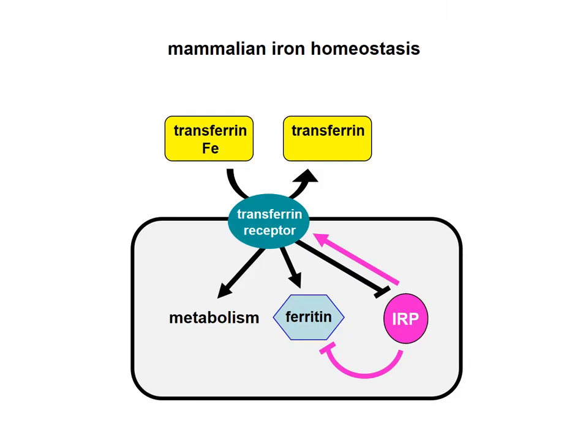Here you can see a very simplified scheme of mammalian iron homeostasis. Key components are transferrin, transferrin receptor, ferritin, and iron regulatory proteins. All of these key components of mammalian iron homeostasis are missing in fungal systems. And as iron is essential for both the host and the pathogens, we think that the differences in iron homeostasis might pave the way to improve antifungal therapy or diagnosis of fungal infections.